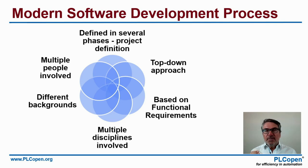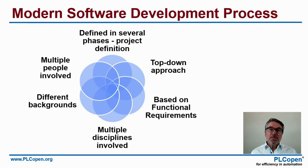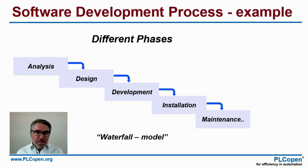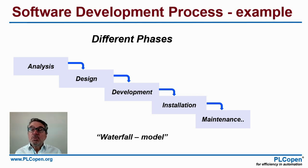You identify different phases. In project definition, you have a top-down approach based on functional requirements, matching multiple people with different backgrounds. An example of a software development process is the waterfall model, with clearly different phases and clear decision points between them — so you know where you are and what you're going to do in the next phase.